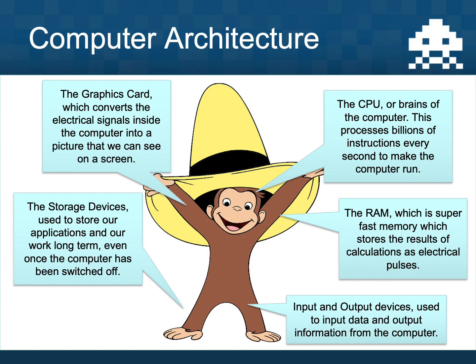The graphics card is the other arm. It converts the electrical signals inside the RAM and CPU into a picture we can see on our screen. Without the graphics card we wouldn't be able to use a computer, because we as human beings wouldn't understand those electrical signals. The input and output devices are one of Archie's legs — the way of a human inputting data and getting information back out, for example clicking with a mouse and seeing that on screen.